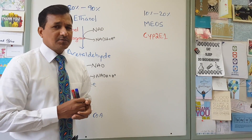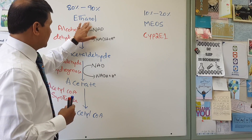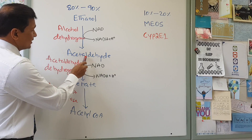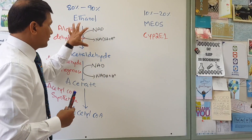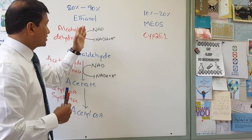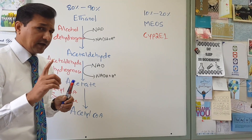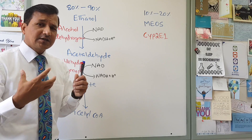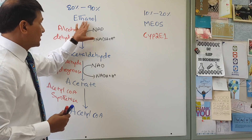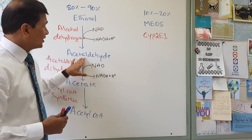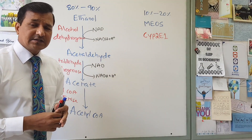Let us see how alcohol is metabolized by enzyme-mediated action in the liver. Ethanol is converted to acetaldehyde by alcohol dehydrogenase enzyme. This particular enzyme catalyzes the conversion of ethanol into acetaldehyde. Alcohol dehydrogenase-1 is a cytoplasmic enzyme with higher affinity for alcohol. During this process, NAD is consumed and NADH plus H+ is released in the cytoplasm.